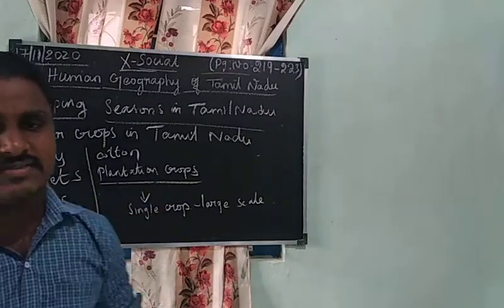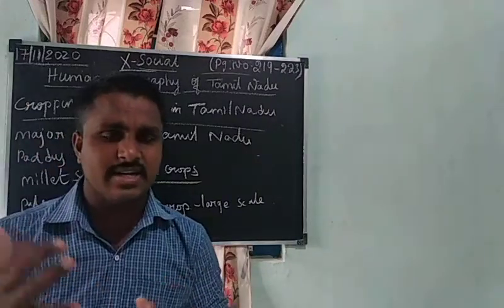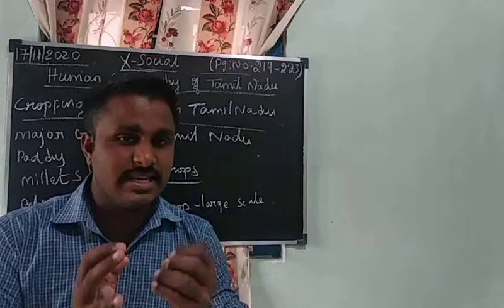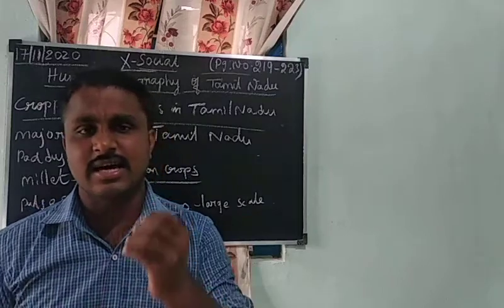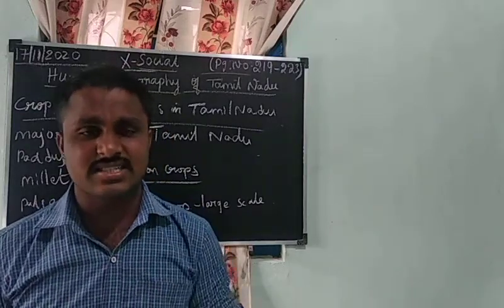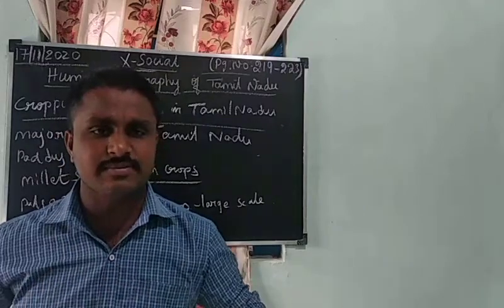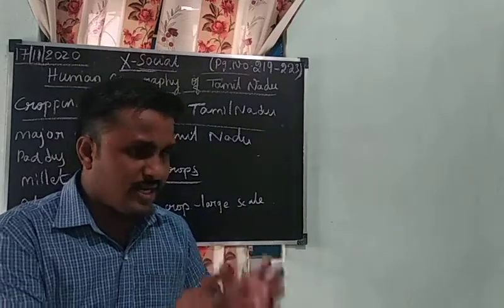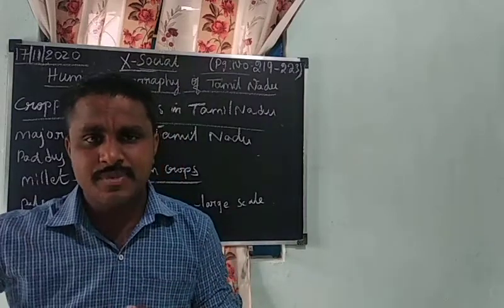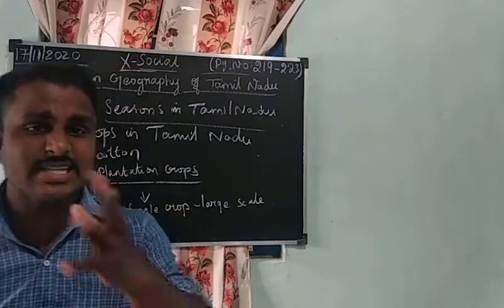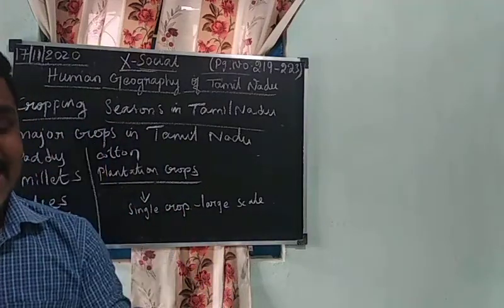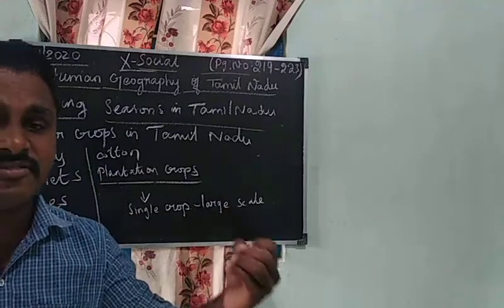Next is irrigation methods. Since we don't get rainfall all the time, they use irrigation methods. The types of irrigation are drip irrigation, canal irrigation, and well irrigation. We store the water and take it to the crops. Different landforms include plateaus, plains, and valleys.